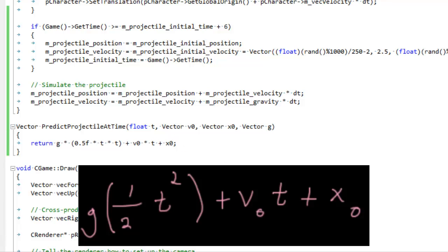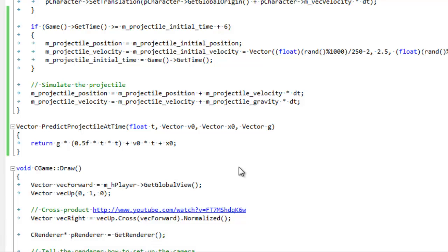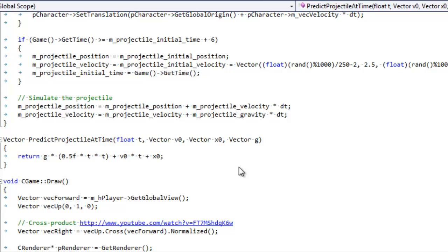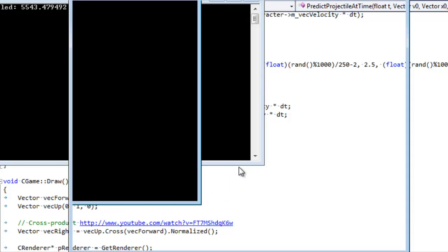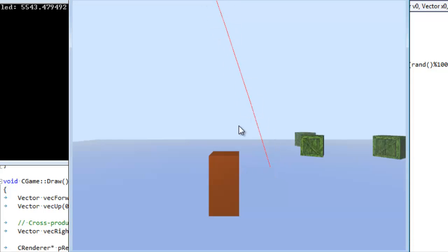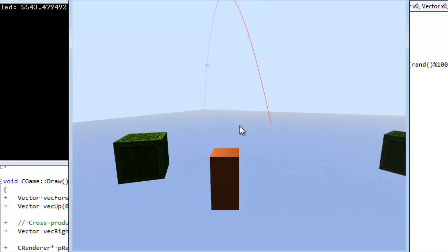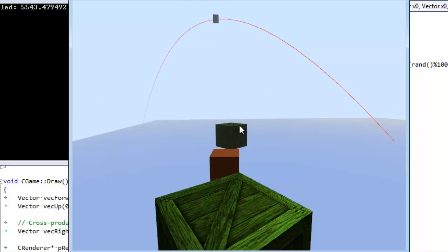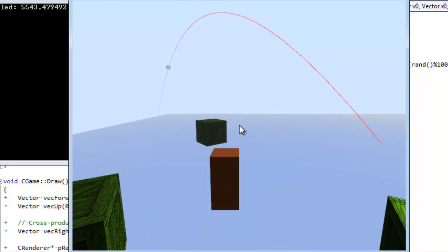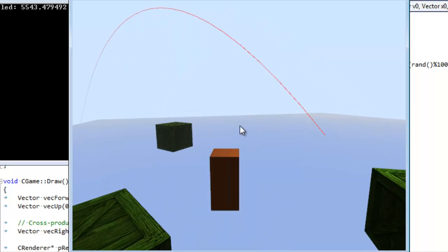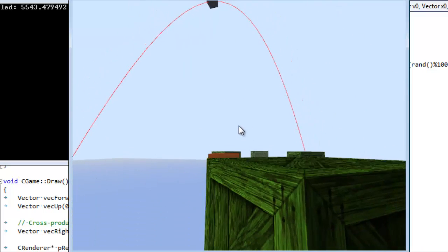We press F5 to run our program. I'm telling you, this math stuff, I like it. I think it's super cool. And then we have the projectile gets fired, and you can see the red line perfectly predicts the path of the projectile. We can see exactly where it's going to go from that red line.